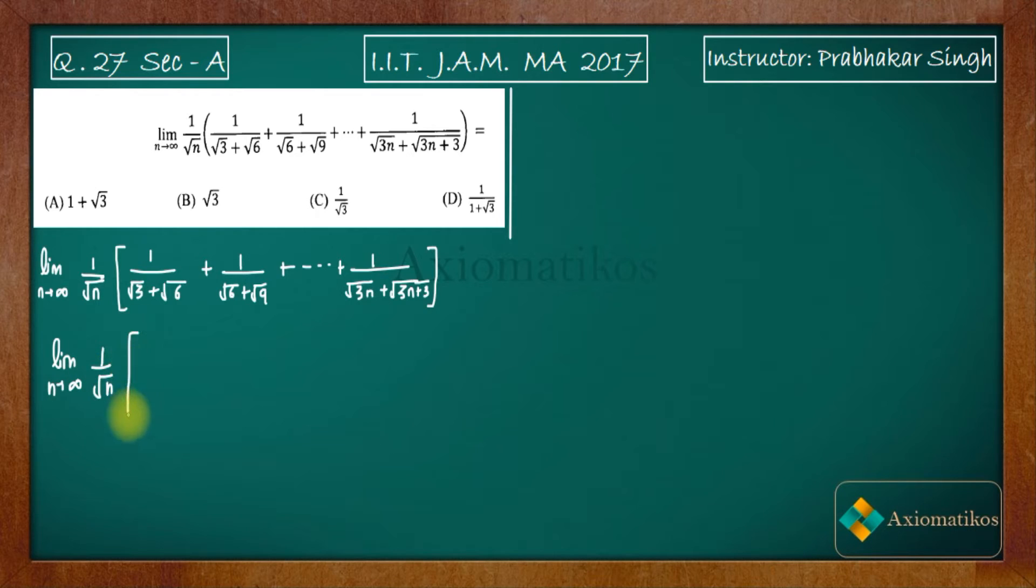Why I am doing rationalization is because after multiplying root 3 minus root 6 and root 3 minus root 6 on the denominator, you will get these roots removed. So you will get something very easy to calculate.